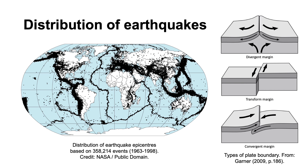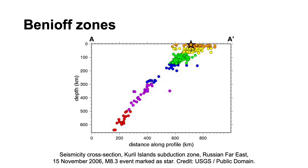But at convergent margins, where the plates are moving towards one another, there can be much deeper earthquakes, extending to depths as great as 430 miles. At convergent margins, where an oceanic plate is sliding beneath the continental plate and descending into the Earth's mantle, the focus of the earthquakes gets progressively deeper along a zone sloping at an average of about 45 degrees, called a Benioff zone. Earthquakes occur within the descending slab because it's cold and rigid and therefore subject to brittle fracture, in contrast to the plastic style of deformation that characterises the warm mantle rocks around it. So the zone of earthquakes essentially marks out the location of the cold, descending slab of ocean lithosphere.